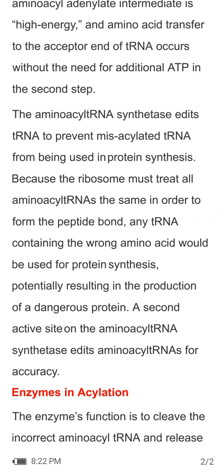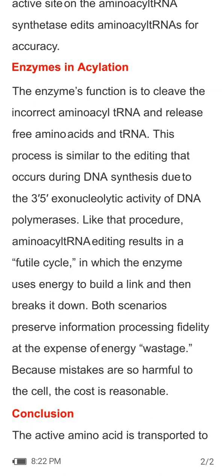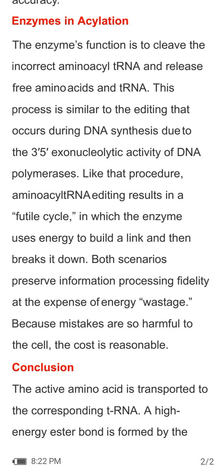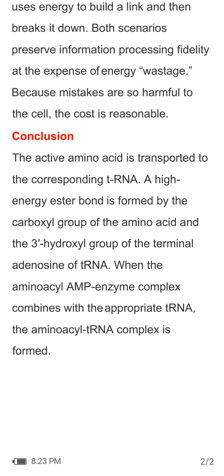The aminoacyl-tRNA synthetase edits tRNA to prevent misacylated tRNA from being used in protein synthesis. Because the ribosome treats all aminoacyl-tRNAs equally when forming peptide bonds, any tRNA carrying the wrong amino acid could be used for protein synthesis, potentially resulting in a dangerous protein. A second active site on the aminoacyl-tRNA synthetase edits aminoacyl-tRNA for accuracy, cleaving incorrect aminoacyl-tRNA and releasing free amino acids and tRNA. This editing results in a futile cycle in which the enzyme uses energy to build a bond and then breaks it down, preserving fidelity at the expense of energy.